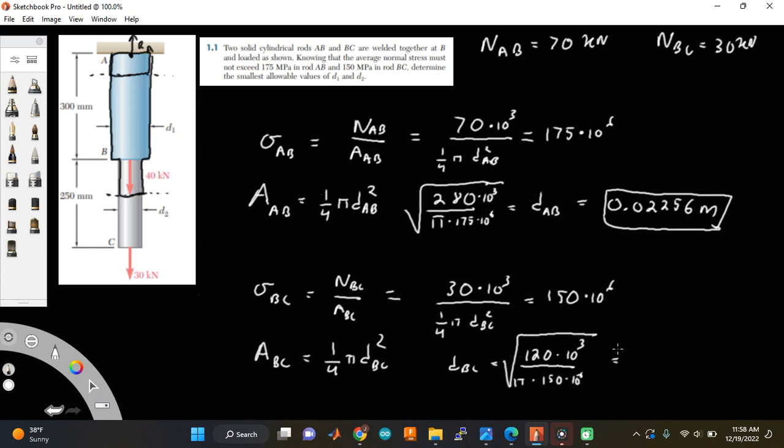And I square root that whole thing. And give me a moment. This turns out to be 0.015957 meters. You can round that to as many as you want. I just keep this just in case I would use it in another step. But this would be the two answers. So DAB would be this value, and this would be DBC.